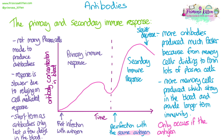The important thing is that we only get a secondary immune response if reinfected with exactly the same antigen. Pathogens can be sneaky and change the shape of the antigens on their surface, so it's not always going to be a secondary immune response even with the same pathogen — it has to be the same antigen. This is antigenic variation.